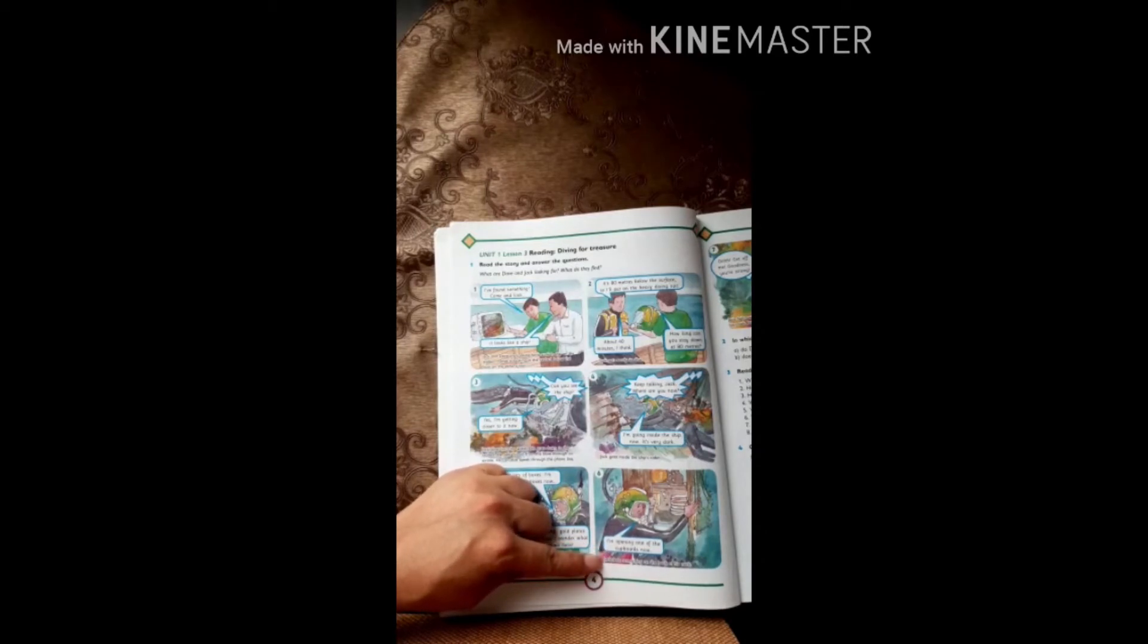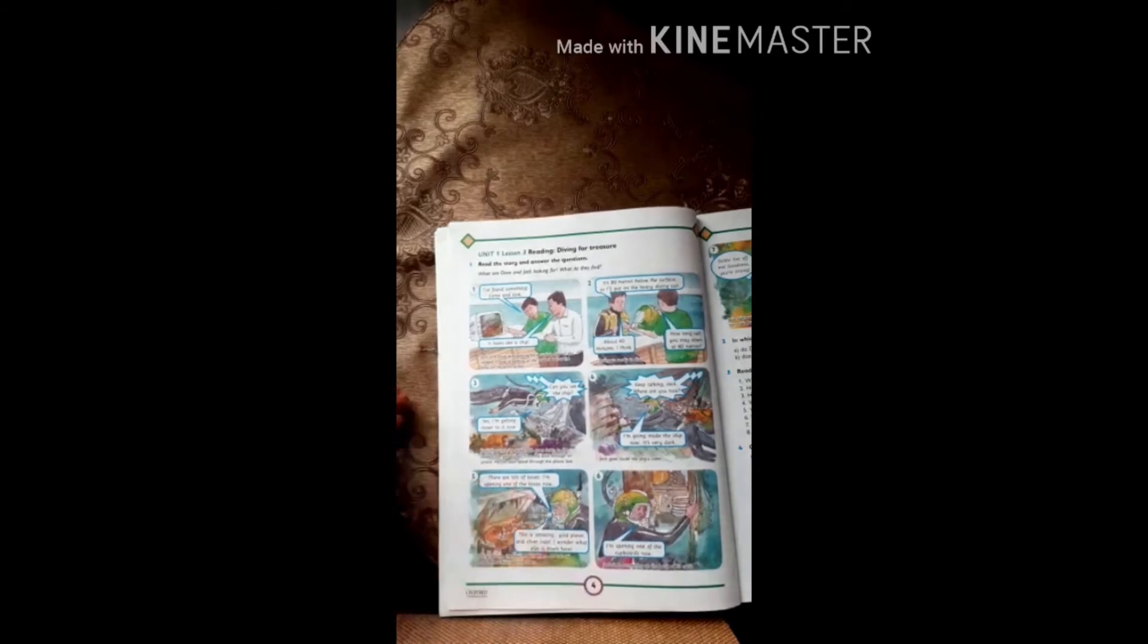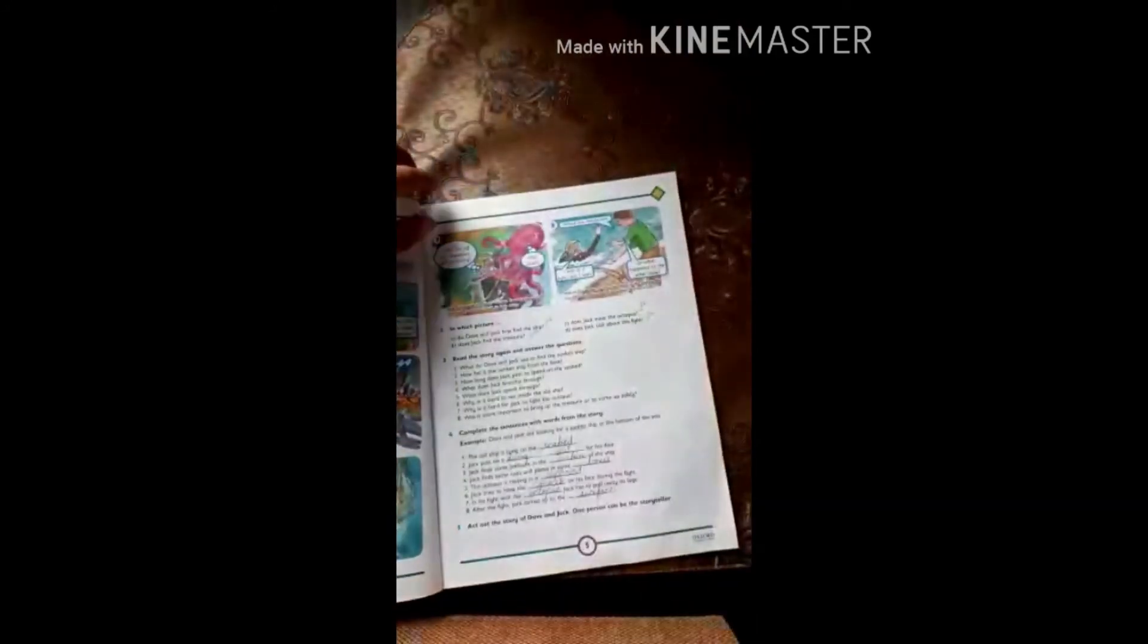Jack feels something on the back of his neck. In picture number six, Jack feels that there is something on his back, on his neck. Now look at the next picture.